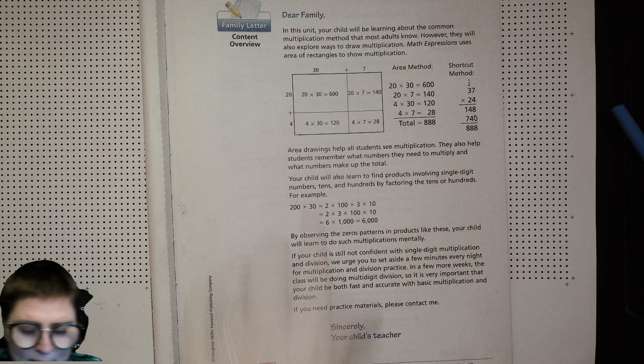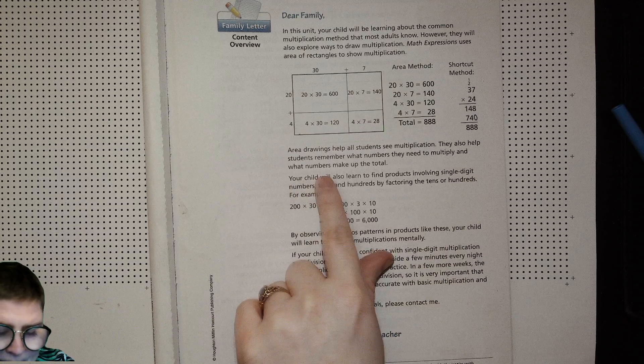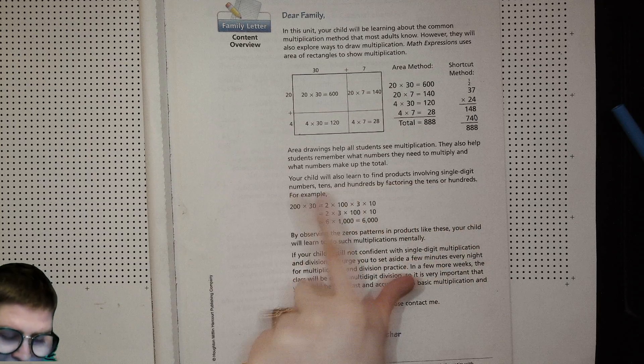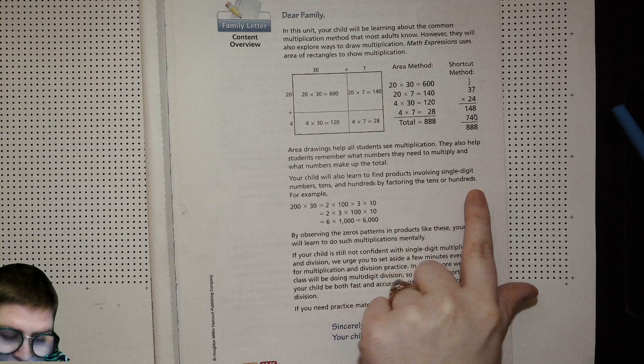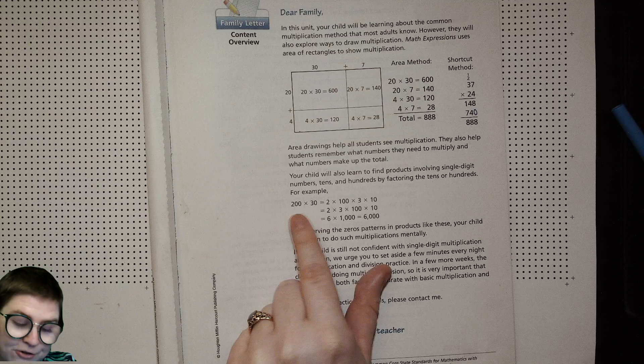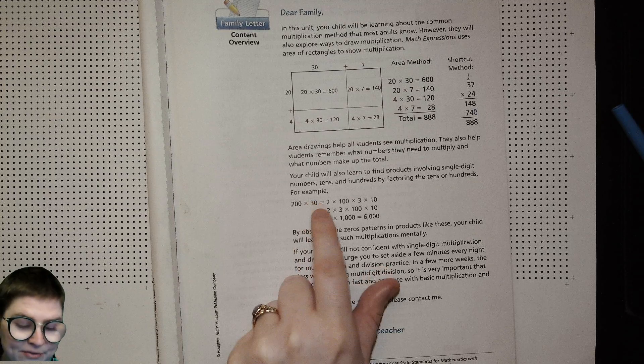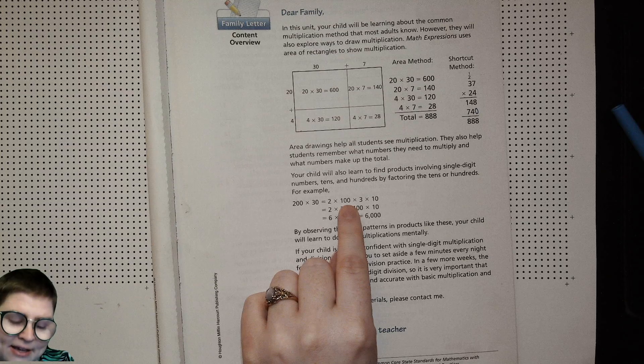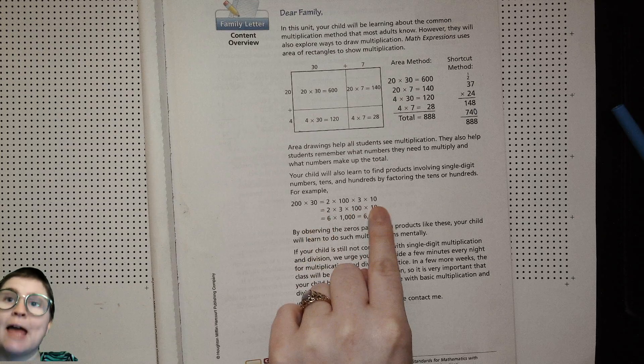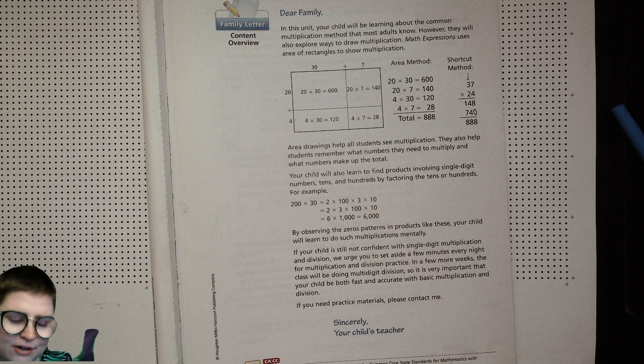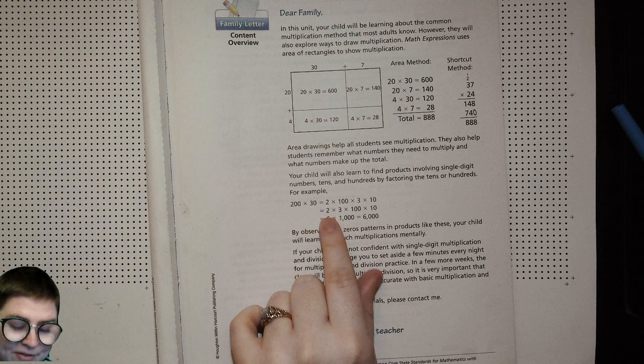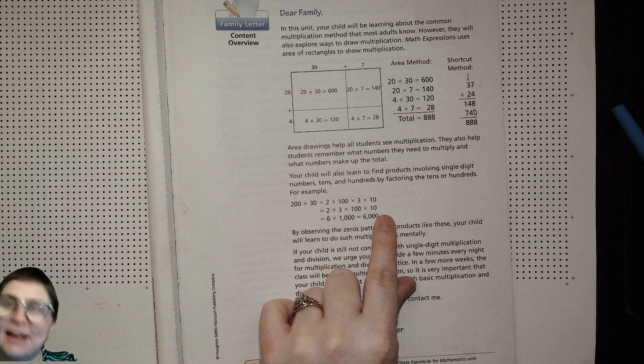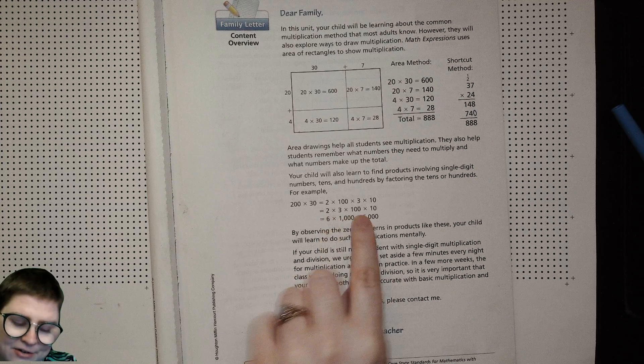They also help students remember what numbers they need to multiply and what numbers make up the total. Your child will also learn to find products involving single digit numbers, tens and hundreds by factoring the tens or hundreds. For example, if you're dealing with a problem like 200 times 30, we'll break down or decompose the 200 into 2 times 100 and then break down the 30 into 3 times 10.